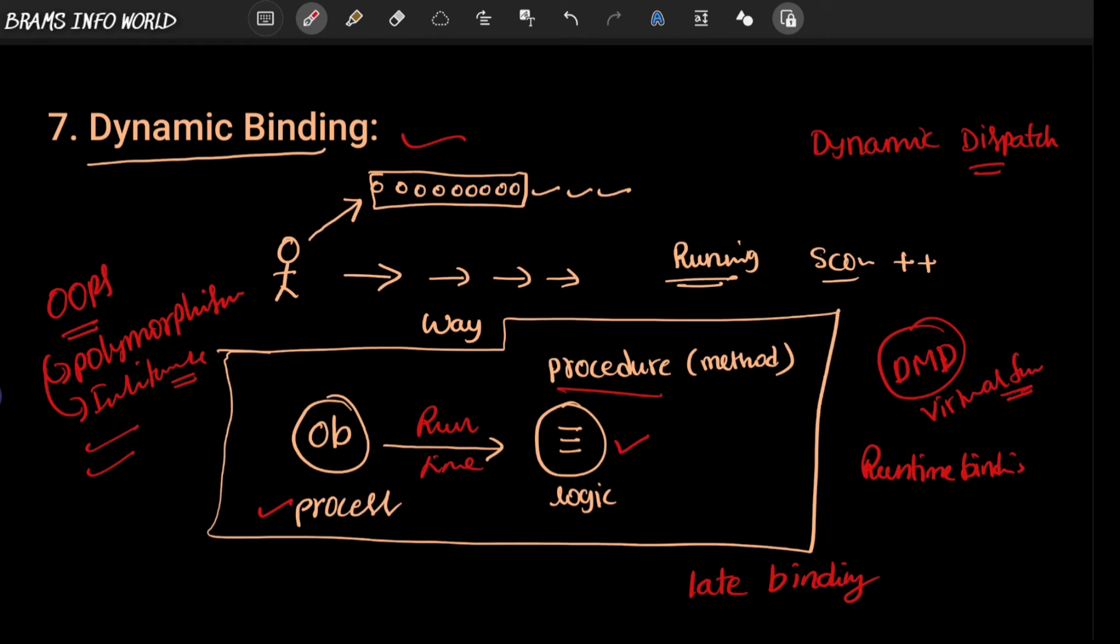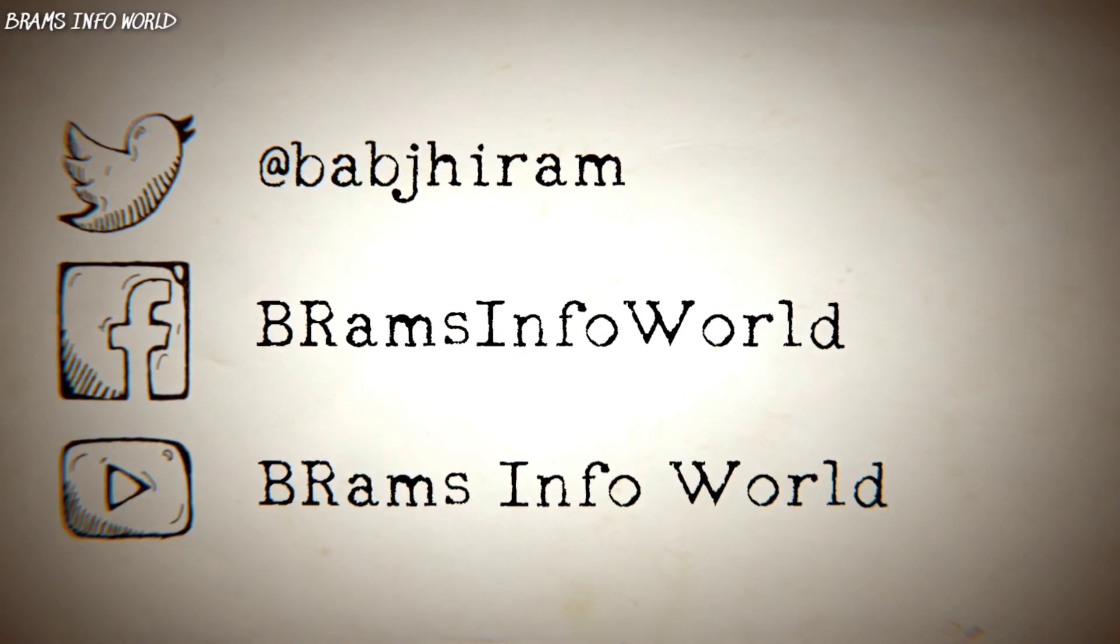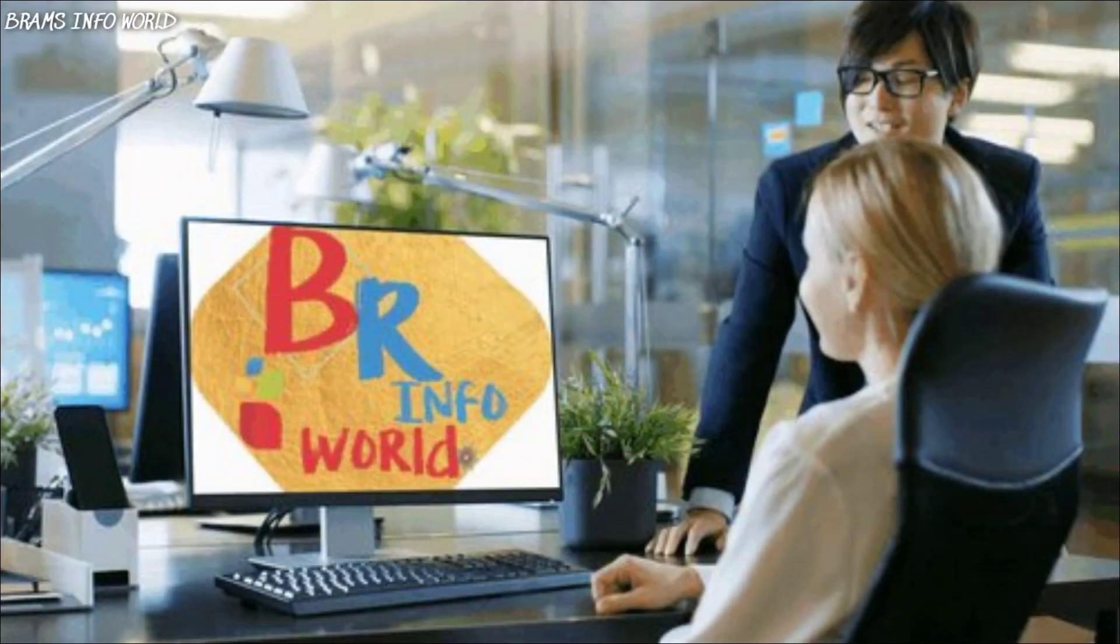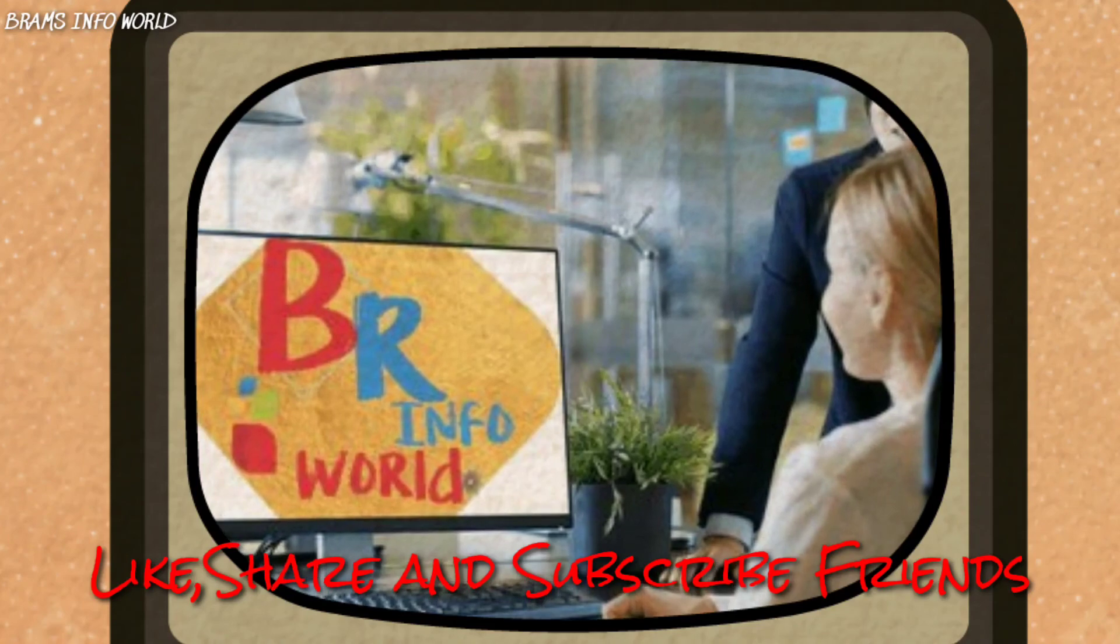This is the concept of dynamic binding in OOP. I hope you understand what dynamic binding is. The game example helps you easily understand dynamic binding. The process of linking the procedure call at a particular sequence of the code during runtime is called dynamic binding or dynamic dispatch. Thank you for watching. If you have any questions, discuss in the comment section.